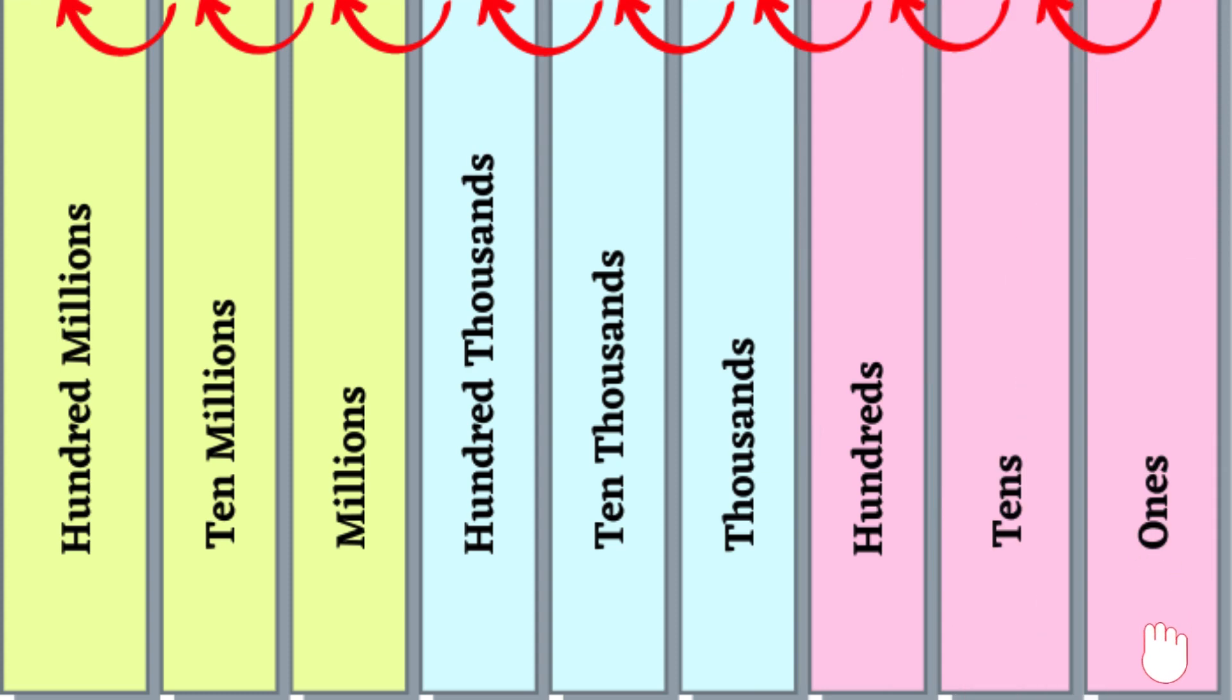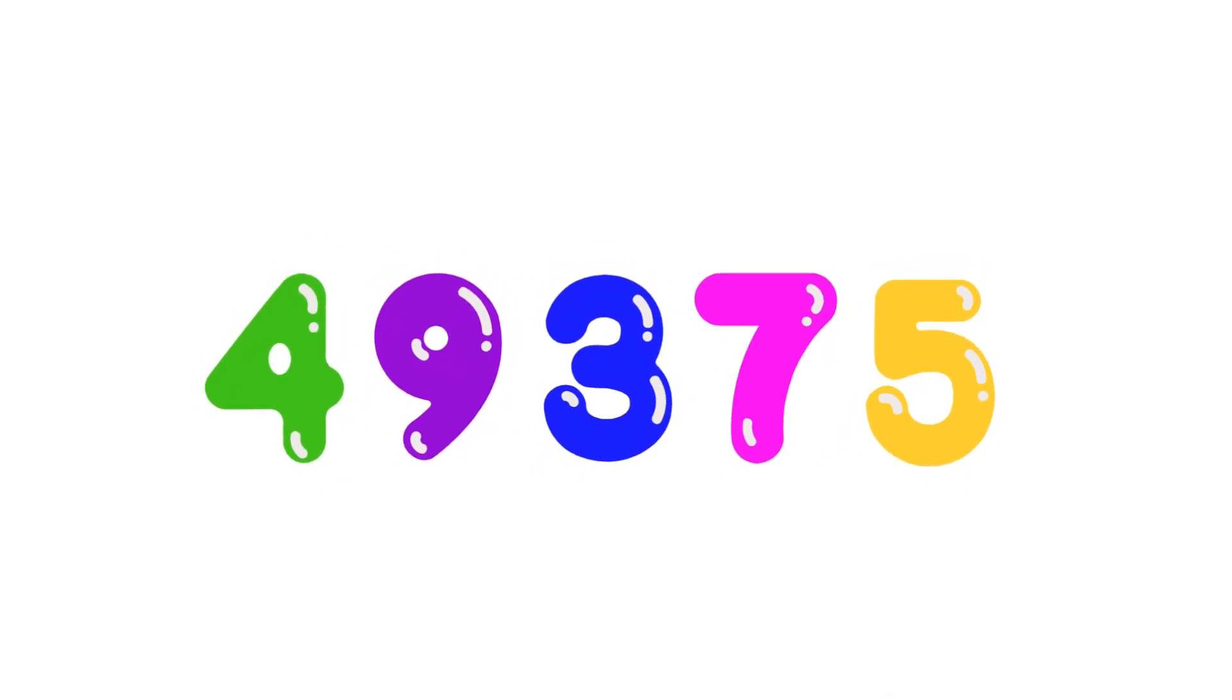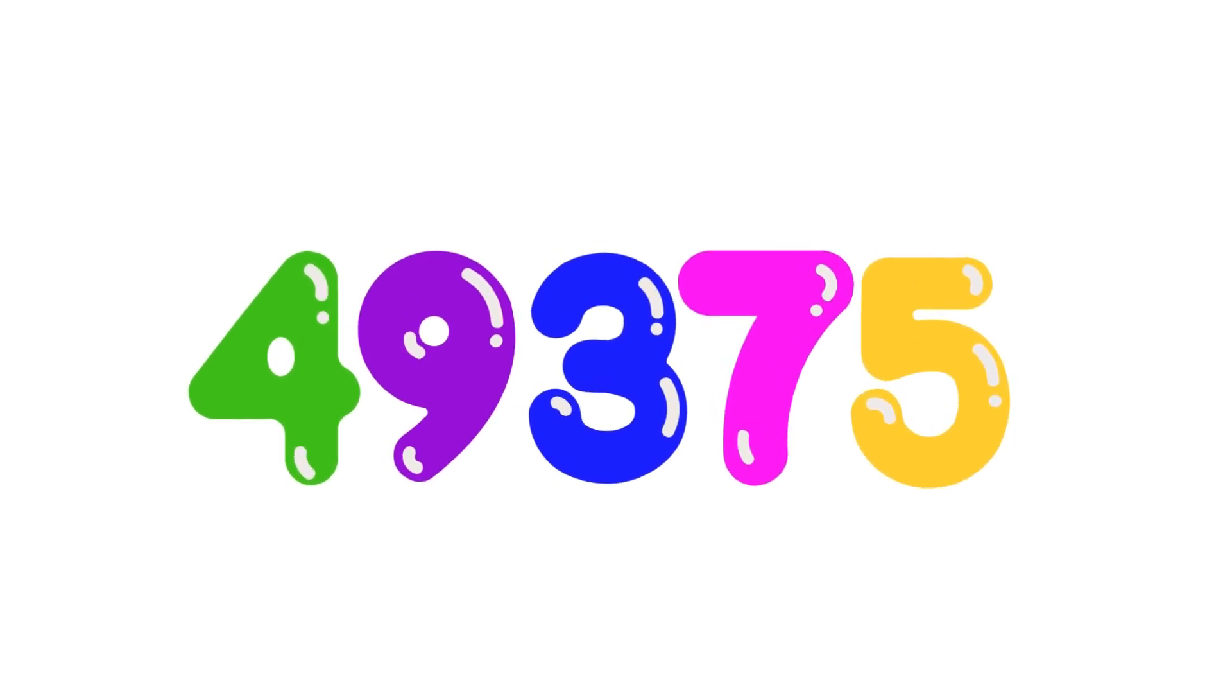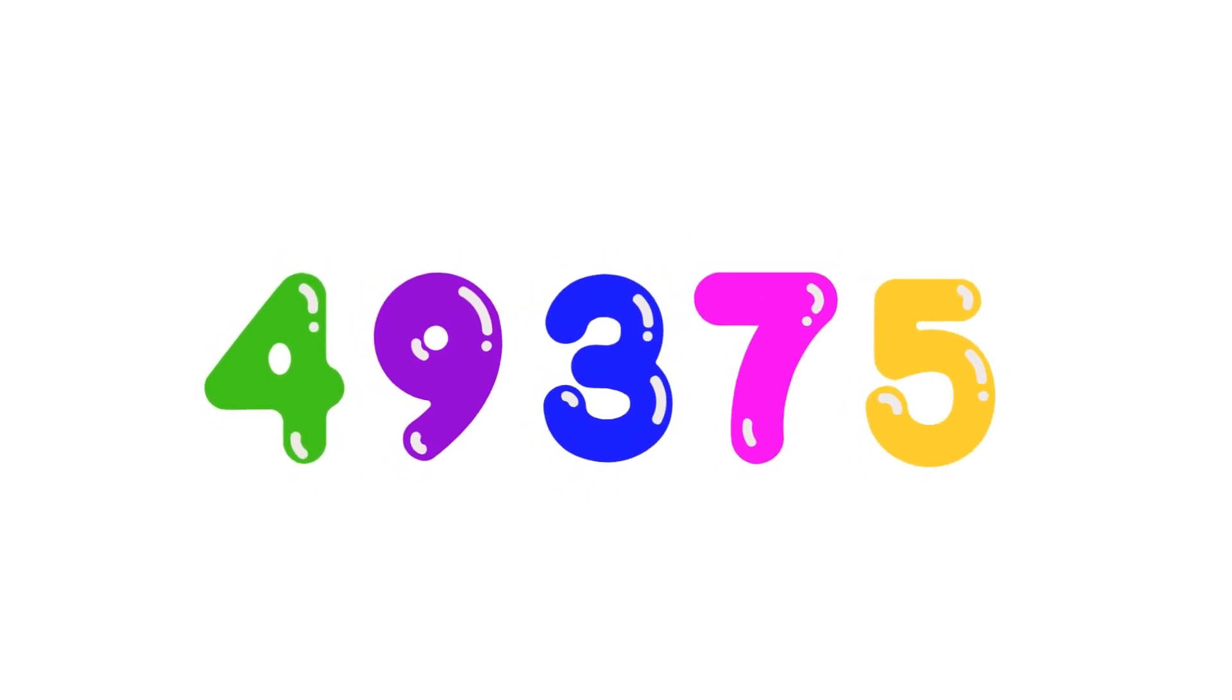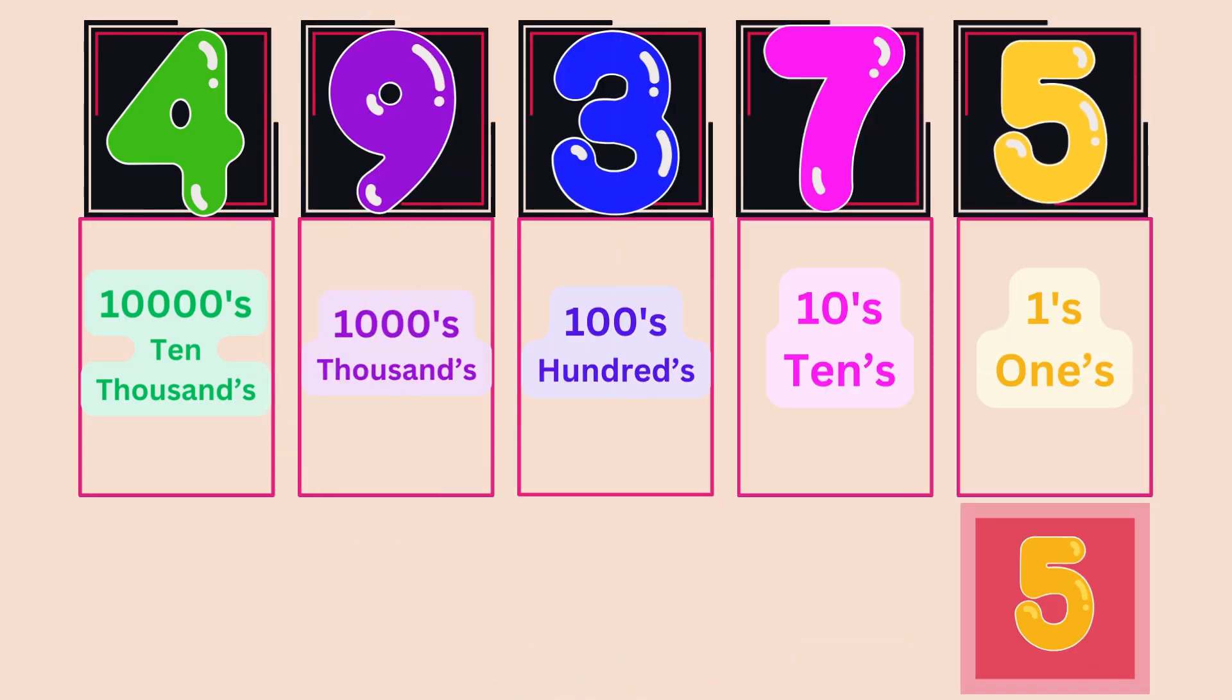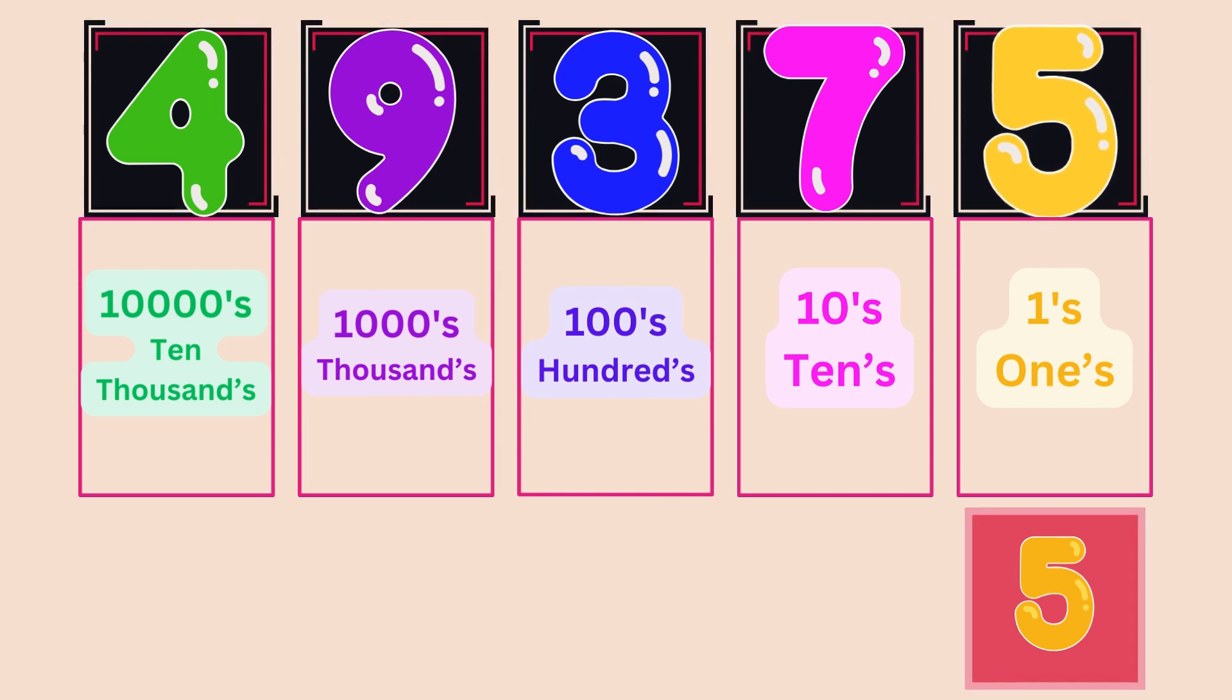The digit in the rightmost position represents 1s. The next one represents 10s. Then 100s, and so on. Hey kids, can we see the value of each digit in this number? A place value of each digit? Let's look at the number 49375. The digit 5 sits in the 1s place, so it means 5 ones, and 5 ones are 5.